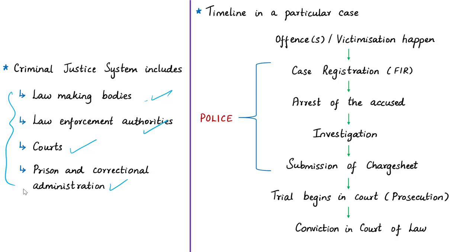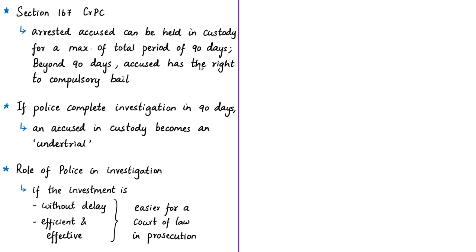In the CJS, the main role is played by police and law enforcement, who register FIRs, arrest and produce the accused, carry out investigation, and submit the final report or charge sheet in court. The Code of Criminal Procedure requires police to complete every investigation without unnecessary delay. The maximum allowed time for investigation in a warrant case — relating to offenses punishable with death, life imprisonment, or imprisonment exceeding two years — is around 90 days from the arrest of the accused.